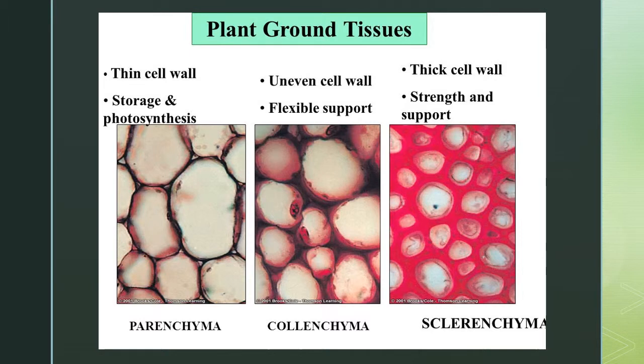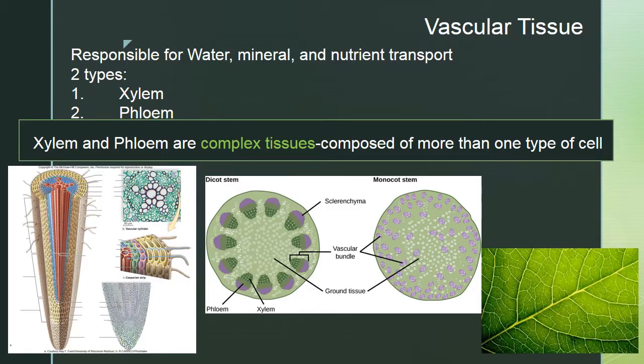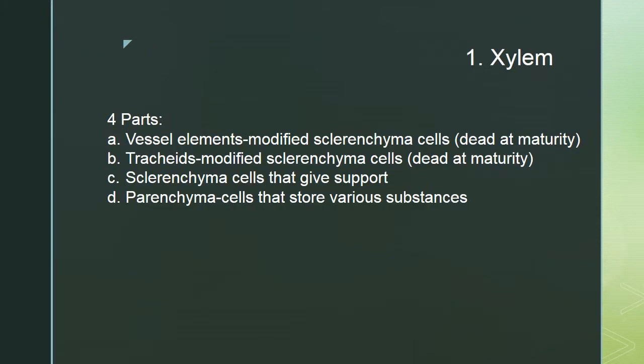Vascular tissue is responsible for water, mineral, and nutrient transport, and there are two types: xylem and phloem. They are complex tissues — composed of more than one type of cell. Xylem has four cell types: vessel elements, tracheids, sclerenchyma cells for support, and parenchyma cells for storing substances.